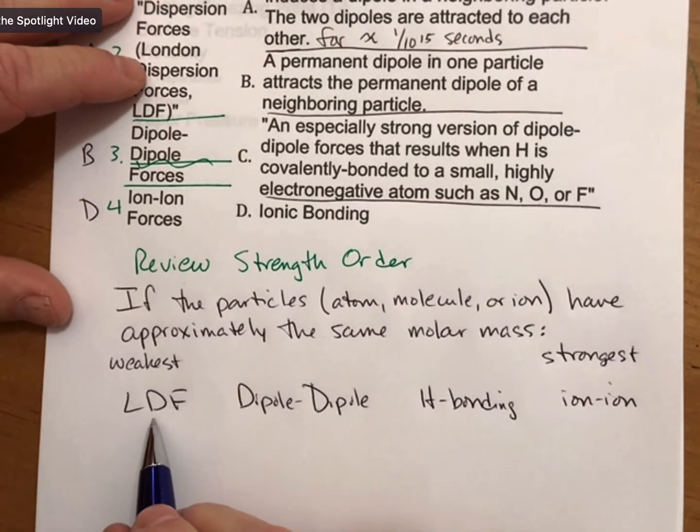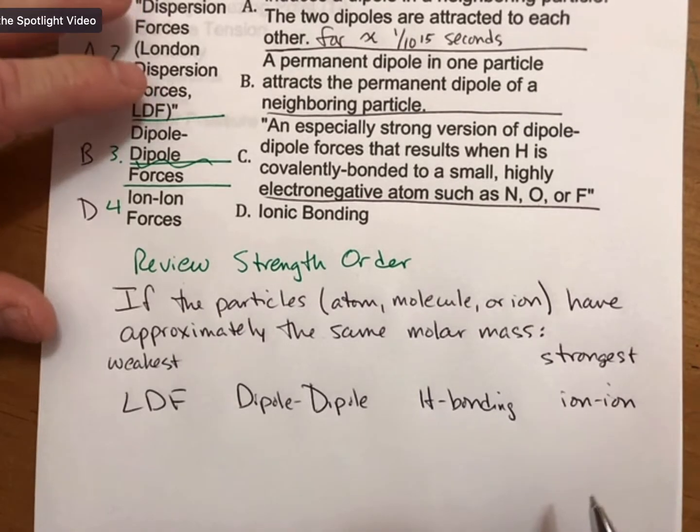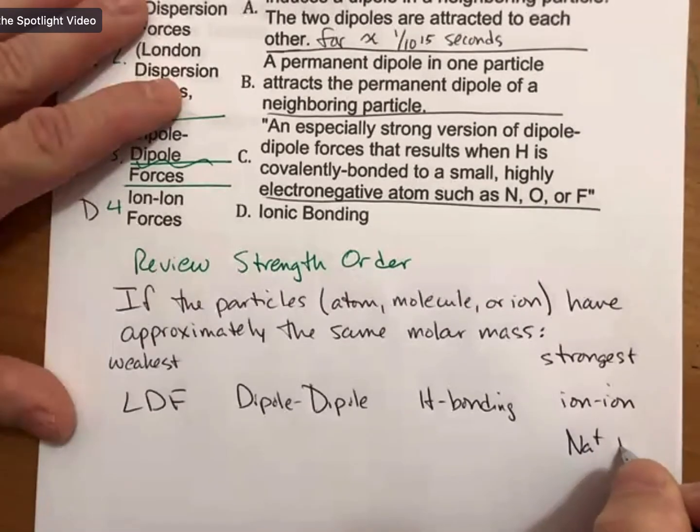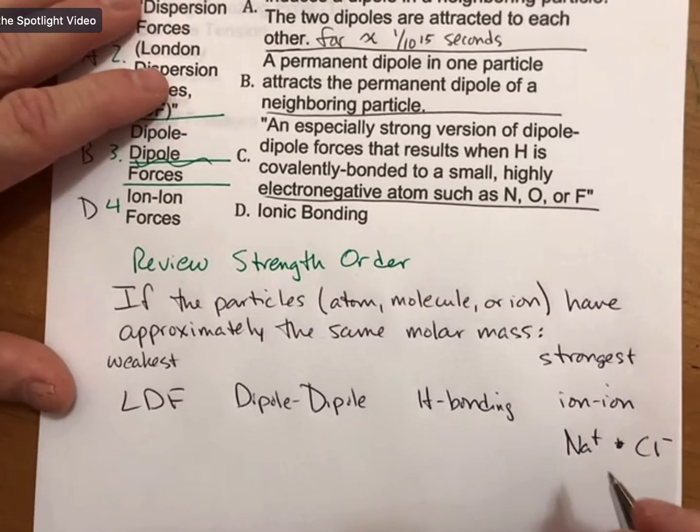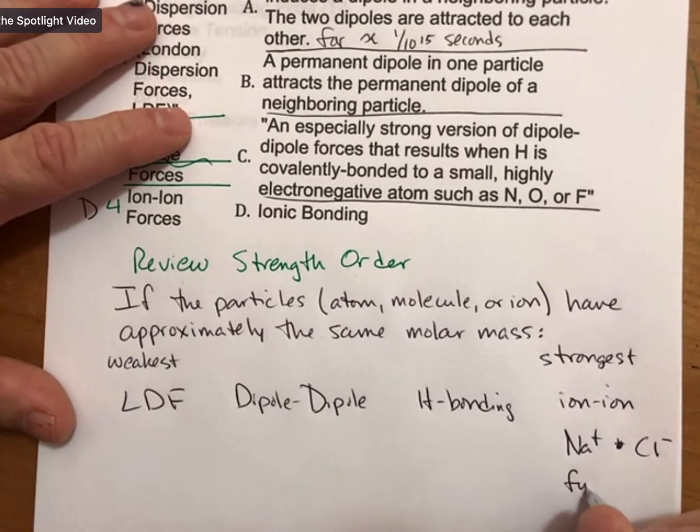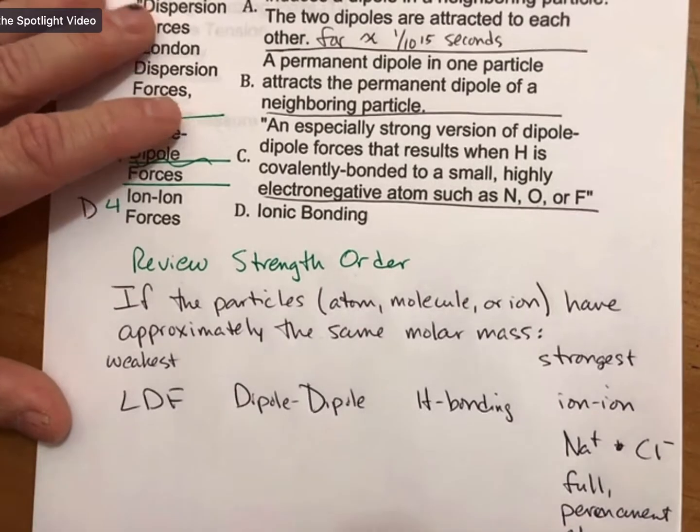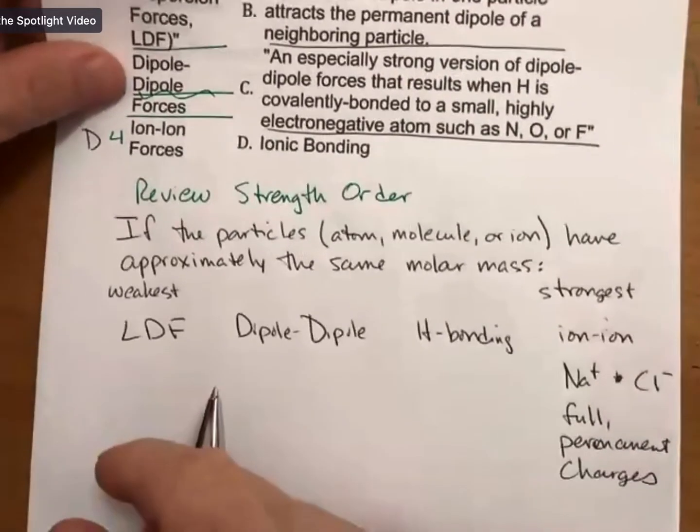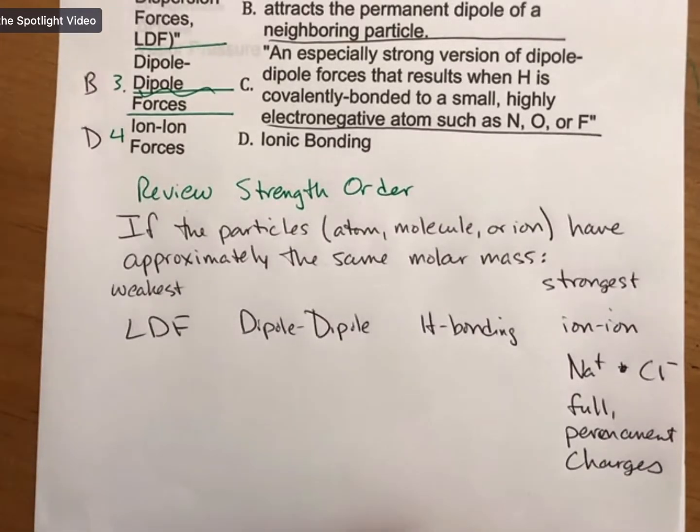The way I think about this is, let's start on the strongest side. Ion-ion would be something between say an Na+ and a Cl-. Ion-ion involves full charges and permanent charges, so full permanent charges. And by full I just mean whole numbers.